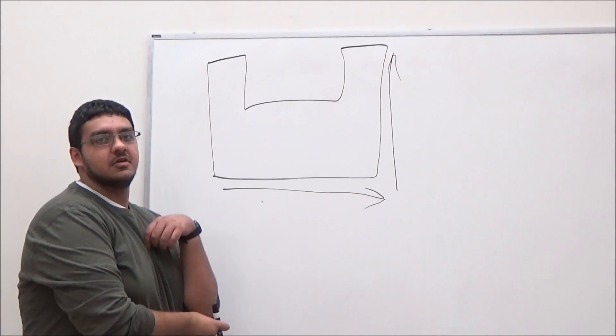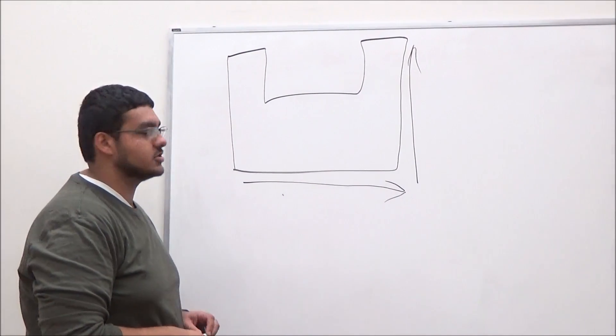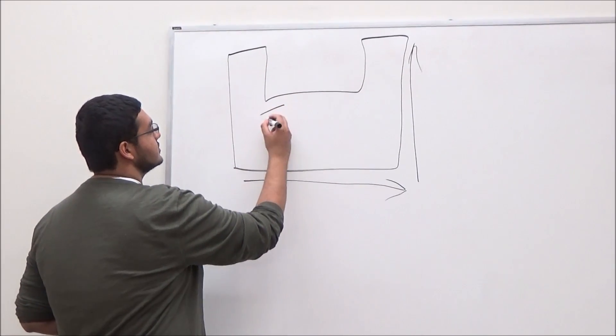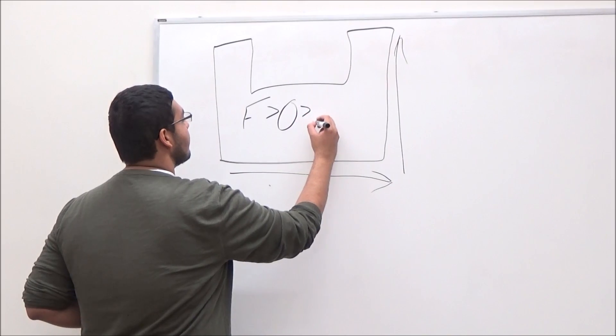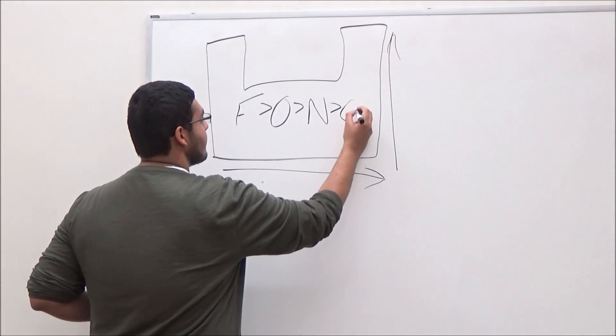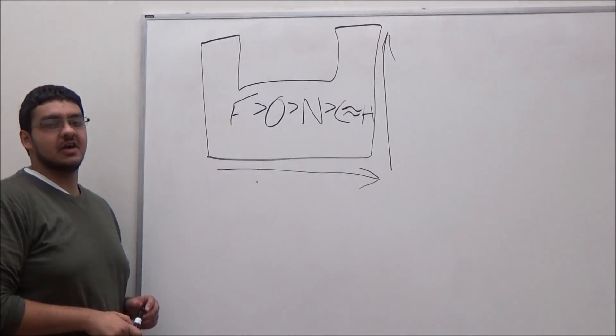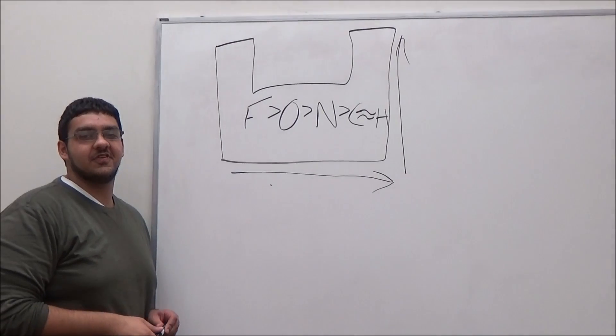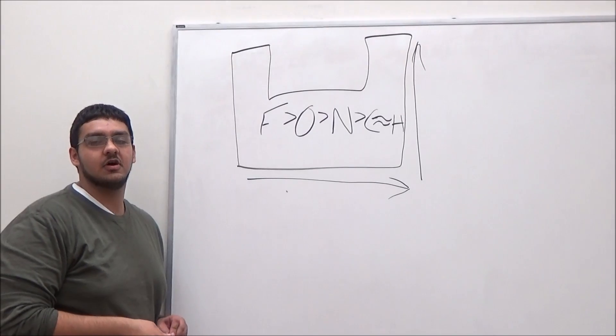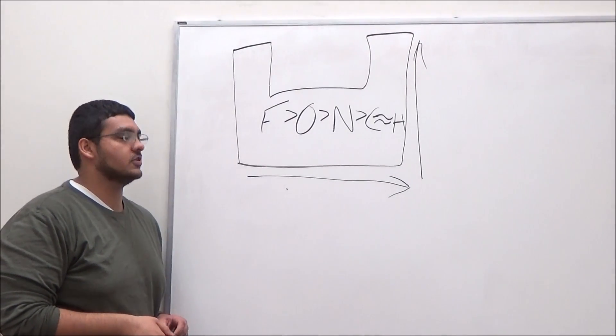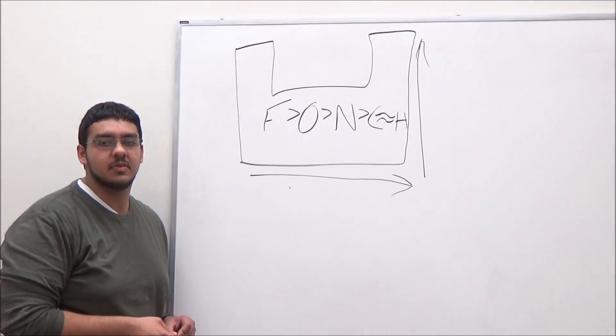So in biology, what's going to be most important for you in terms of electronegativity is to know this little mnemonic. Do you see that? That says FAUNCH, and that's probably the easiest way for me, as your TA, to remember the electronegativities of the most important molecules you'll be dealing with in biology.